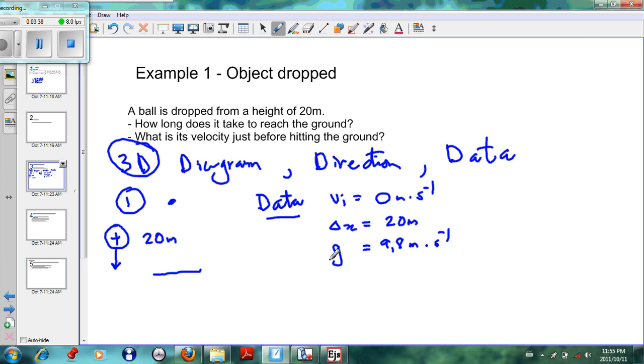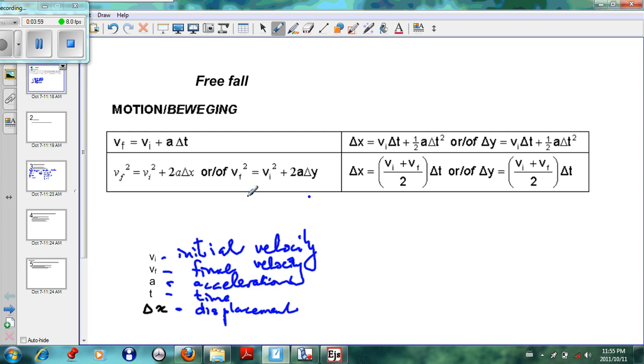Once we have these three things, the first question asks how long. To work out how long, we have to take time and work out what the time will be. We have to go back to our data sheet and see which equation has vi, x, g, and t. If you look carefully, you'll see the equation that has vi, t, x, and g which is acceleration is this one. The equation we will use is this equation, or in our case, because we are working with height, we will use delta y.